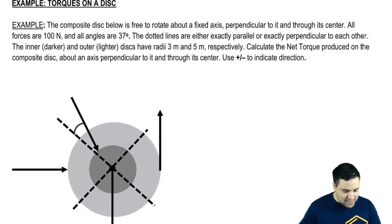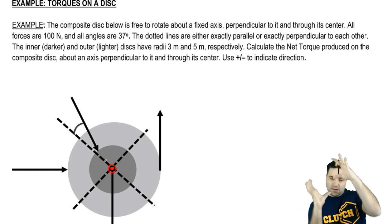So here we have a composite disk, which means there's two different disks. You've got the inner disk, which is the dark one here, and then the outer disk here. This is so you can have two different radii. They are free to rotate about a fixed axis perpendicular to its center. So basically the disks can spin this way, right?